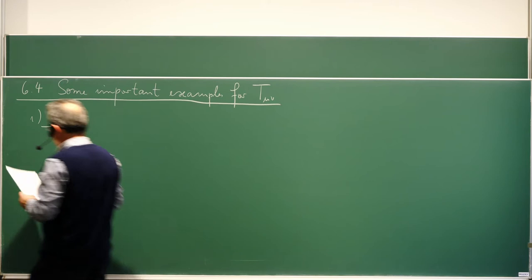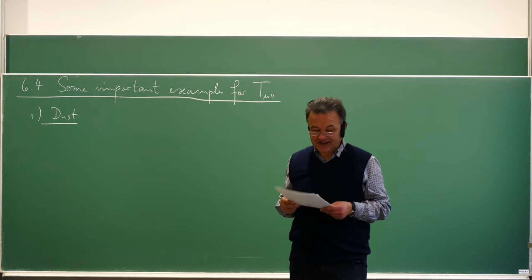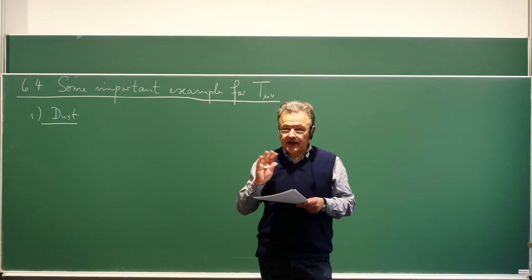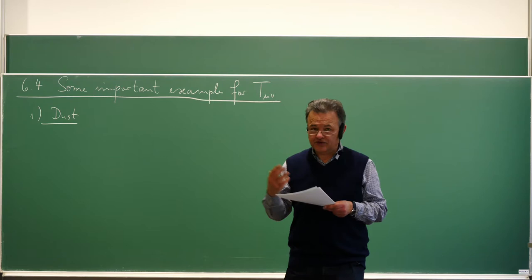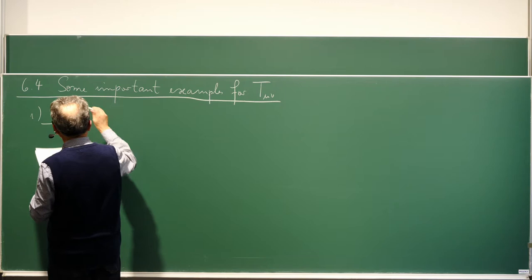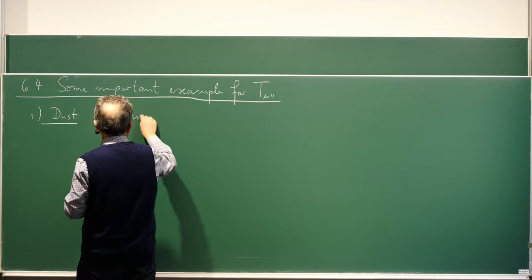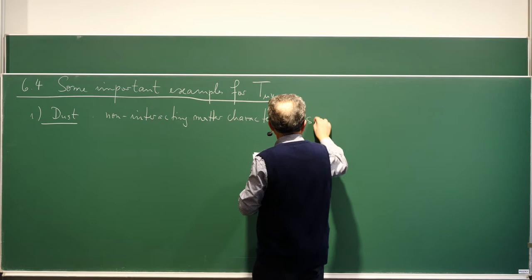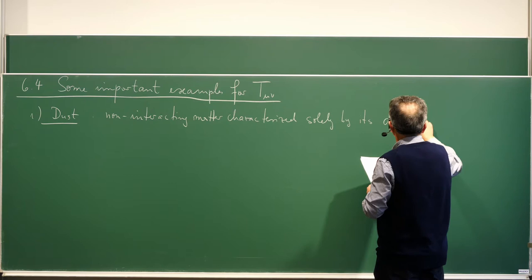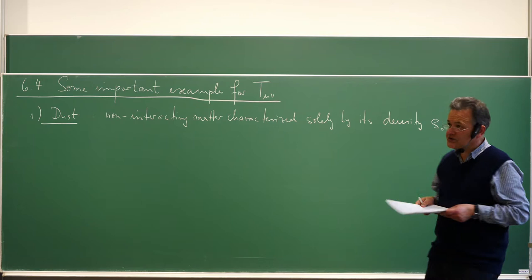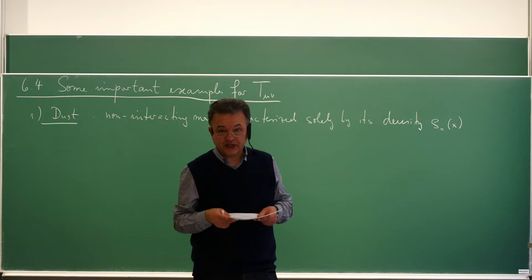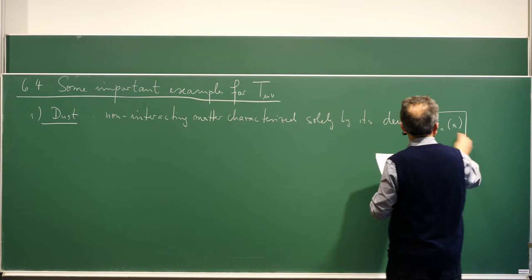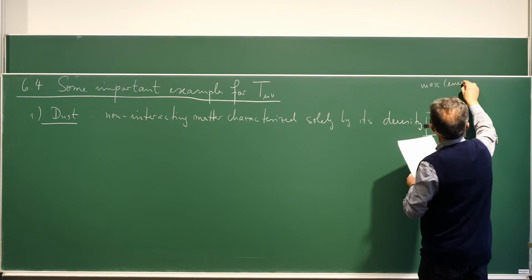The first example is dust. Dust is just the name — we will also use it in cosmology as a model for galaxies, which is certainly not literally dust. Dust means non-interacting matter, entirely characterized by its mass or energy density. I call it ρ₀(x), where ρ₀ stands for the mass or energy density as measured by a co-moving observer. We set the speed of light equal to one.